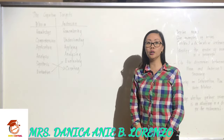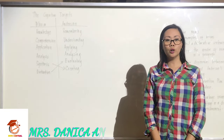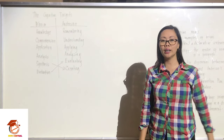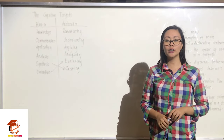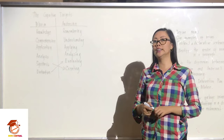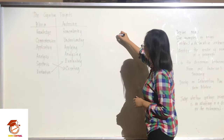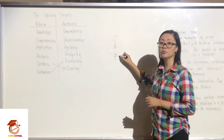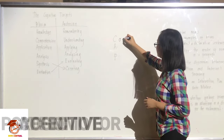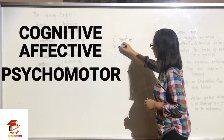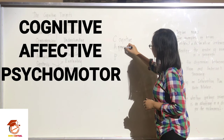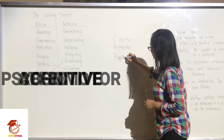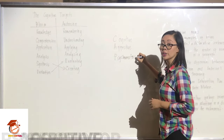In the construction of our lesson plan, we always have to start with an end in mind. And in starting with an end in mind, we have to remember our learning targets or the three domains of learning. We have three domains of learning and our mnemonic for that is CAP — that's cognitive, affective, and psychomotor.